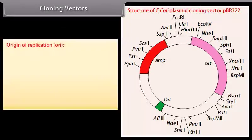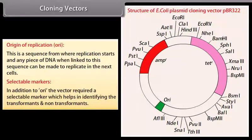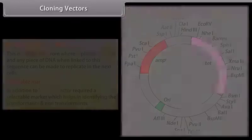Origin of replication. This is a sequence from where replication starts and any piece of DNA when linked to this sequence can be made to replicate in the next cells. Selectable markers. In addition to ORI, the vector required a selectable marker which helps in identifying the transformants and non-transformants. For example,